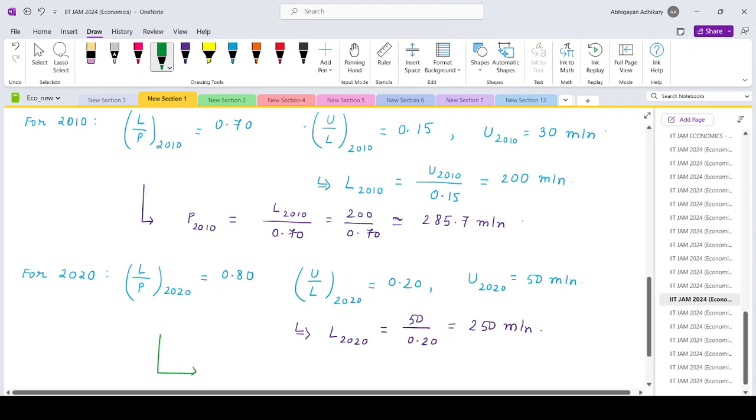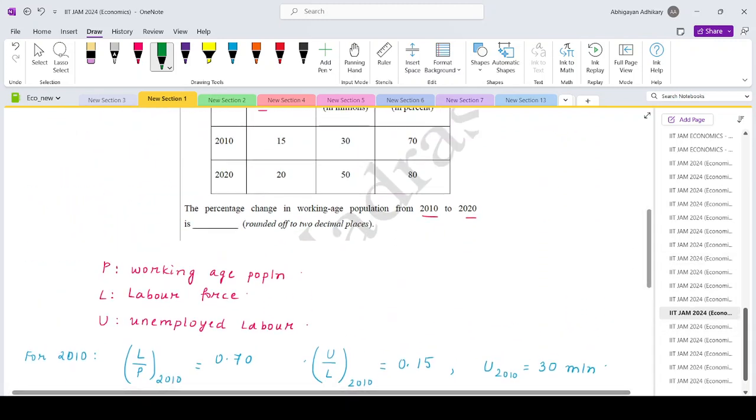And from there, the total population would be L 2020 divided by 0.8, that is 250 divided by 0.8. That turns out to be 312.5 million.